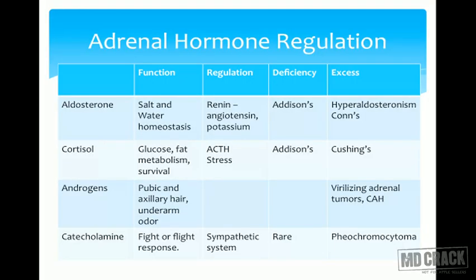Aldosterone deficiency is Addison's disease, and excess is called hyperaldosteronism. If it is due to a single unilateral adenoma, it is then called Conn's syndrome.